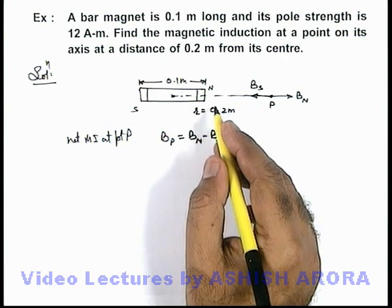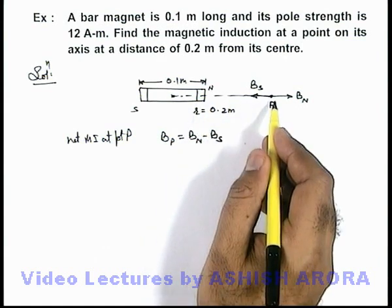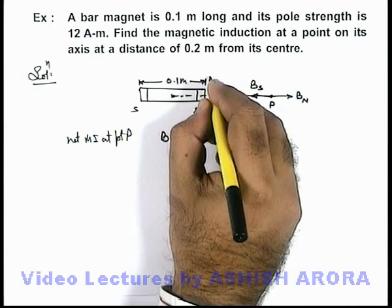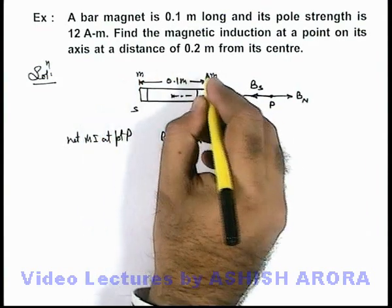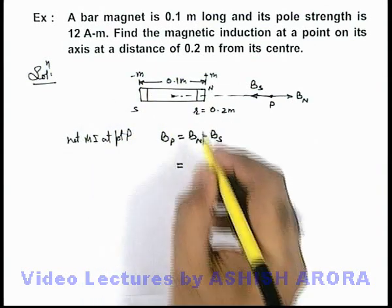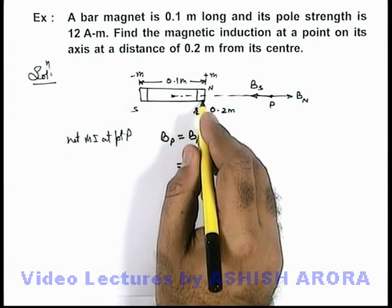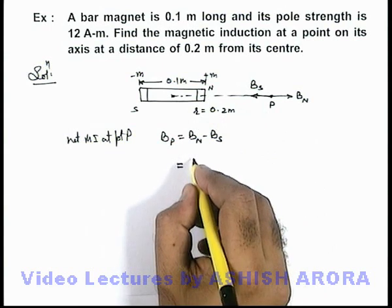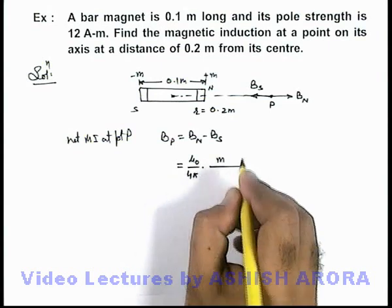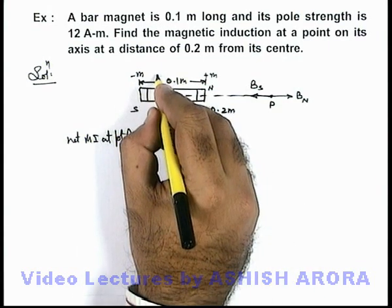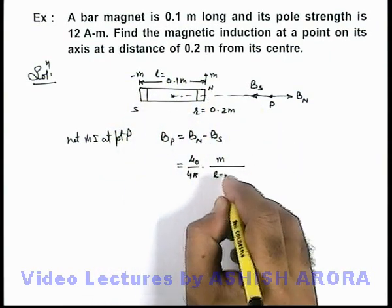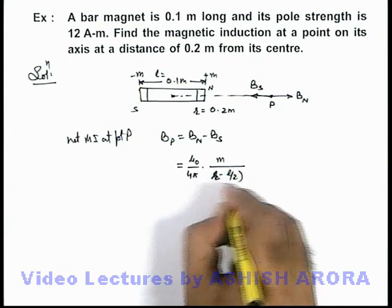Due to a magnetic pole, the magnetic induction is given as k m by the distance square. If we consider the pole strength to be m, as in a magnet the two poles have identical pole strength which we can denote by plus m minus m or m_n or m_s. Here due to north pole we can directly write this is given as μ₀/4π times m divided by the distance square. If this distance is taken as l, then we can write it r minus l/2 whole square.